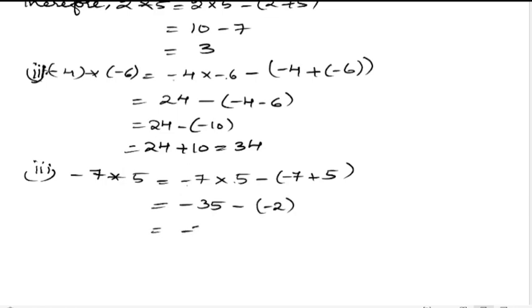So minus 35, minus into minus is plus 2. If we subtract 2 from 35, we will get 33. So that is minus 33 is the answer.